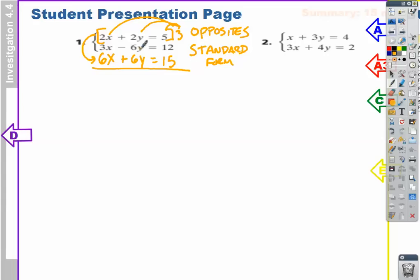I have my opposites right here. Negative 6y plus 6y is going to cancel out to 0. 3x plus 6x is 9x. 12 plus 15 is 27. So the opposite of multiplying x by 9 is dividing by 9. We get x equals 3.